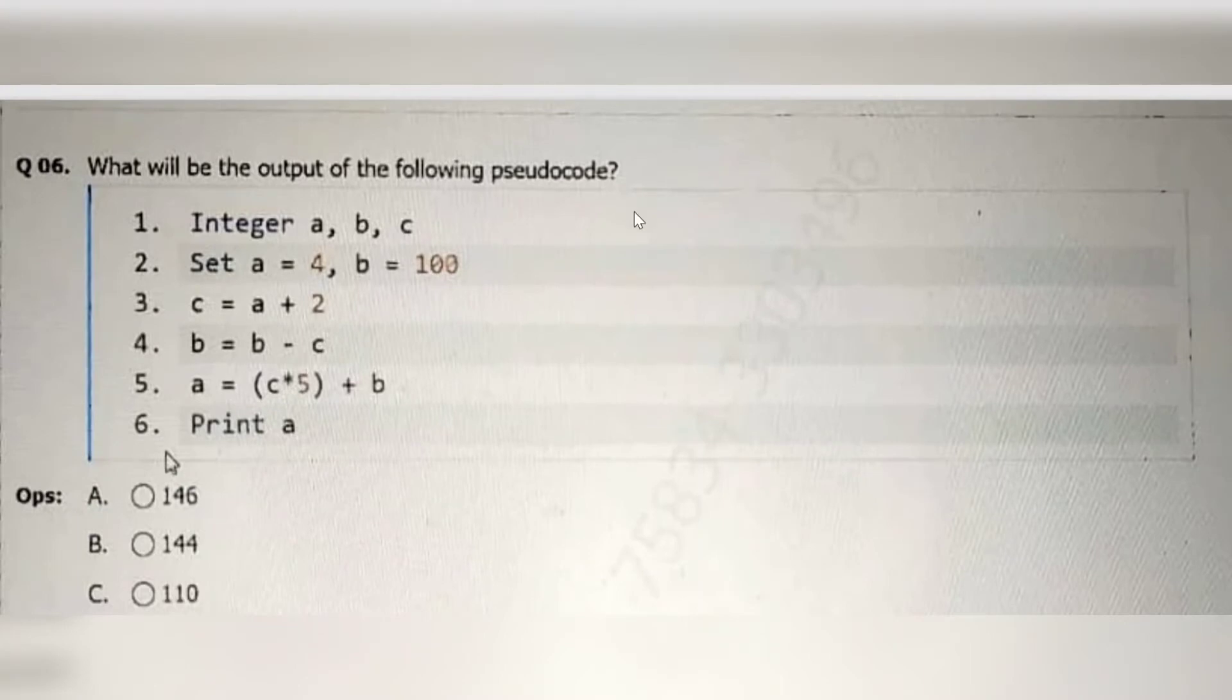Here A is 4, B is 100. A is equal to 4, B is equal to 100. C equal to A plus 2 that is 4 plus 2 which is equal to 6. Then B equal to B minus C means 100 minus 6 that is 94.